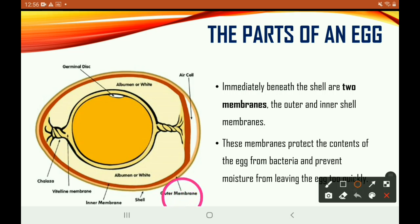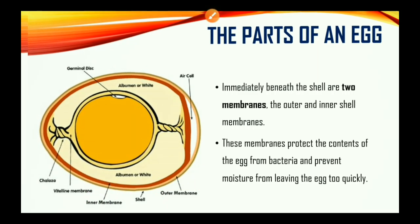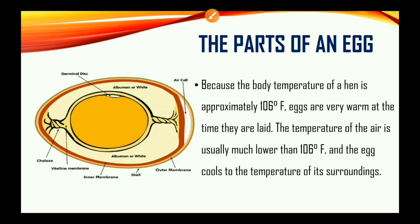Here is the outer membrane right here. After the shell, you have the outer membrane and then you have the inner membrane. Because the body temperature of a hen is approximately 106 degrees Fahrenheit, eggs are very warm at the time they are laid. The temperature of the air is usually much lower than 106 degrees Fahrenheit, and the egg cools to the temperature of its surroundings.